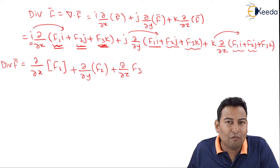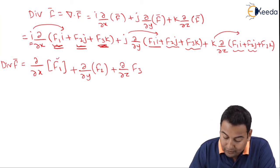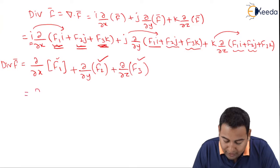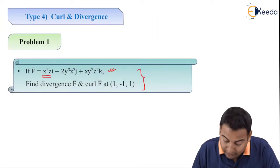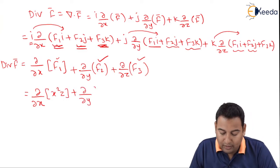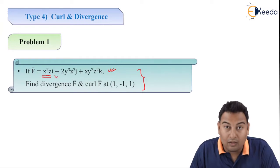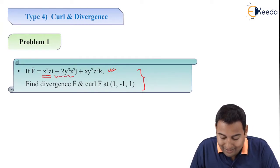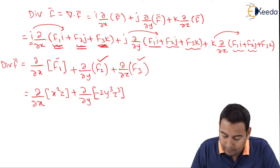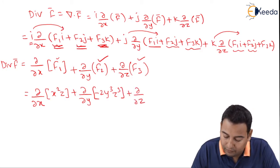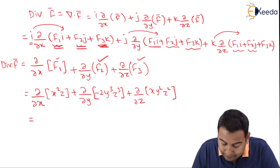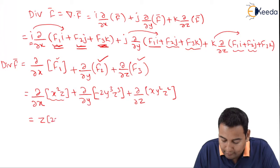With i, whatever you have, write it here; with j, write it here; with k, write it here. So divergence of f̄ equals ∂/∂x of (x²z) with i, plus ∂/∂y of (−2y³z³) with j — we need to consider the minus sign also — plus ∂/∂z of (xy²z²) with k.